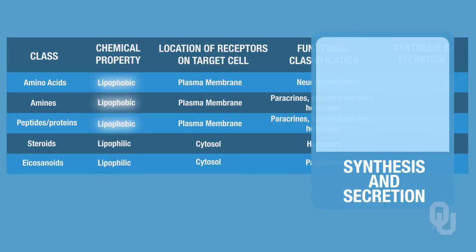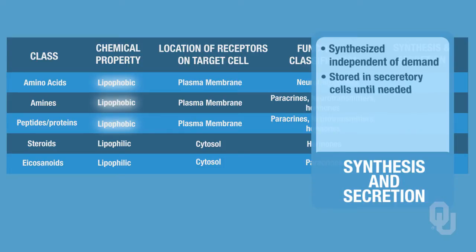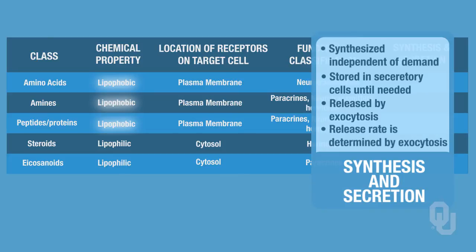Lipophobic ligands work completely differently. Lipophobic ligands — your amino acids, amines, proteins, and peptides — are all synthesized independent of the demand. They're just continually made whether or not they're needed, then stored in secretory vesicles of the secretory cell until they're needed. When the body needs them, they get released by exocytosis from the secretory cell, and the release rate is determined by the rate at which exocytosis can occur.